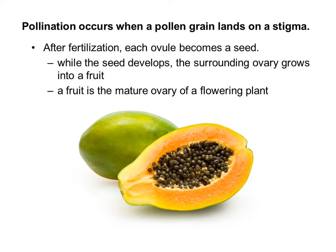After fertilization, each ovule becomes a seed. While the seed develops, the surrounding ovary grows into a fruit, so a fruit is actually the mature ovary of a flowering plant. Fruit is very important for spreading seeds — an animal can eat the fruit, digest the seeds, and the seed coat will protect the seeds as they pass through the animal's digestive system. When the animal travels and eliminates, those seeds have spread to a new location.